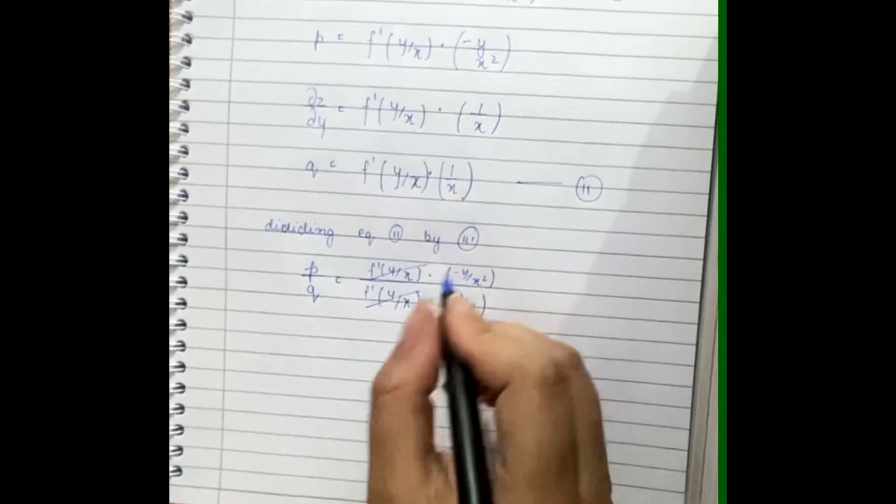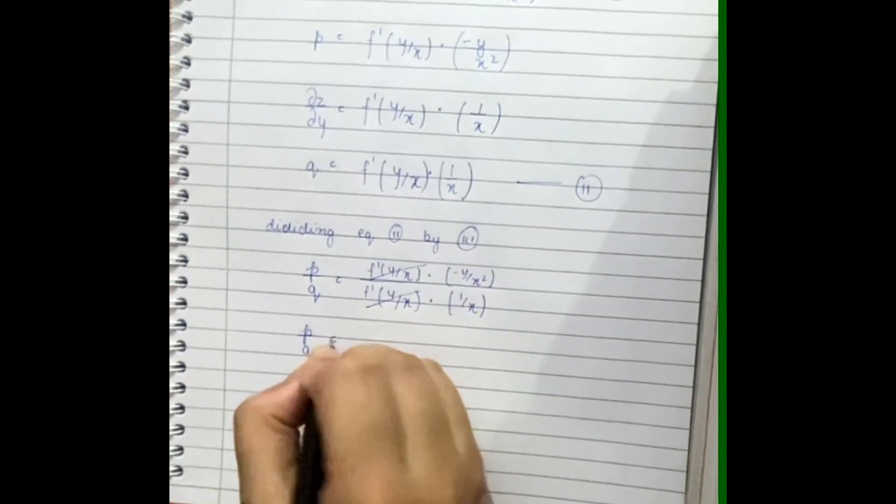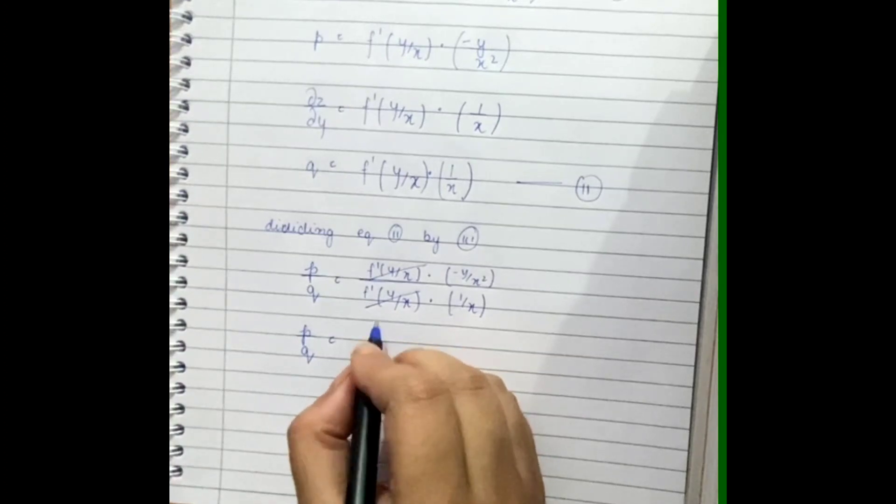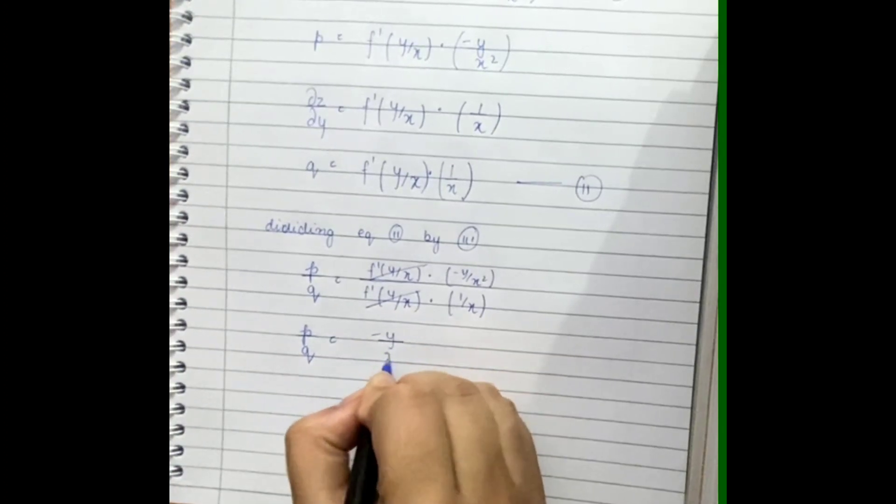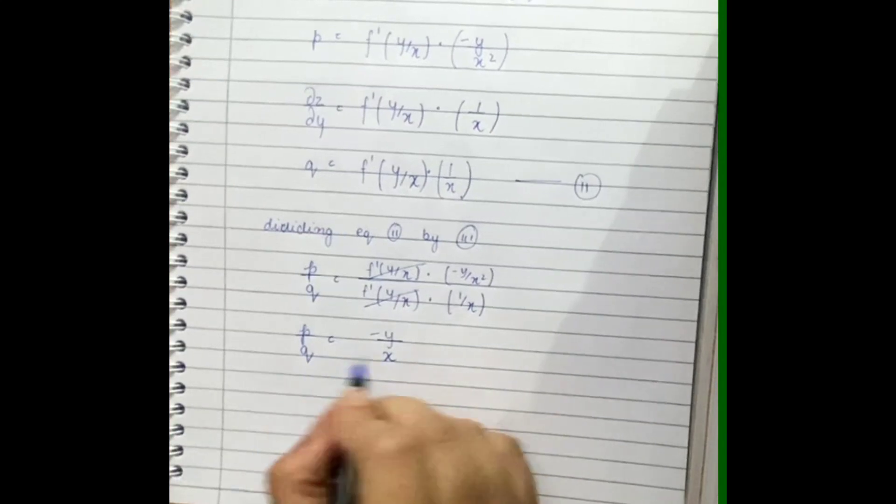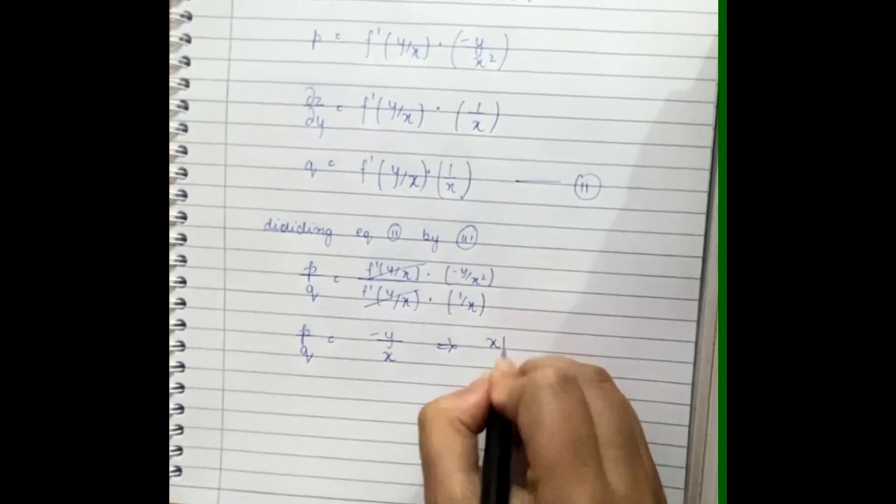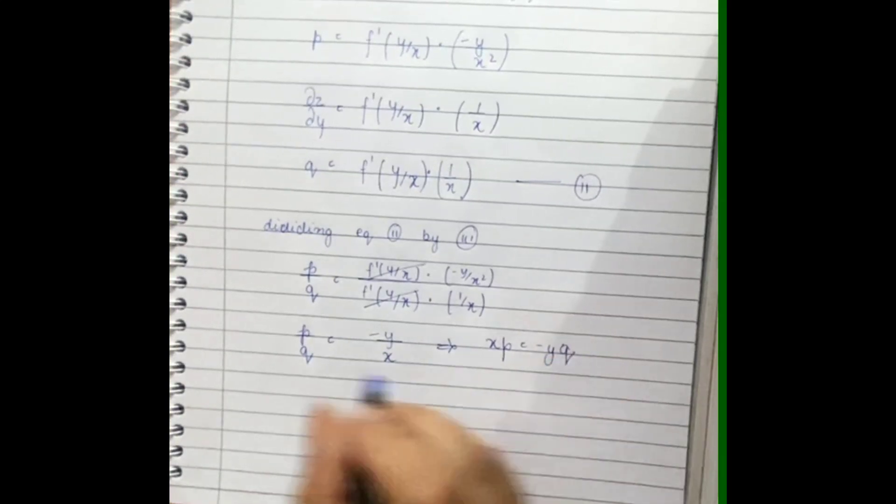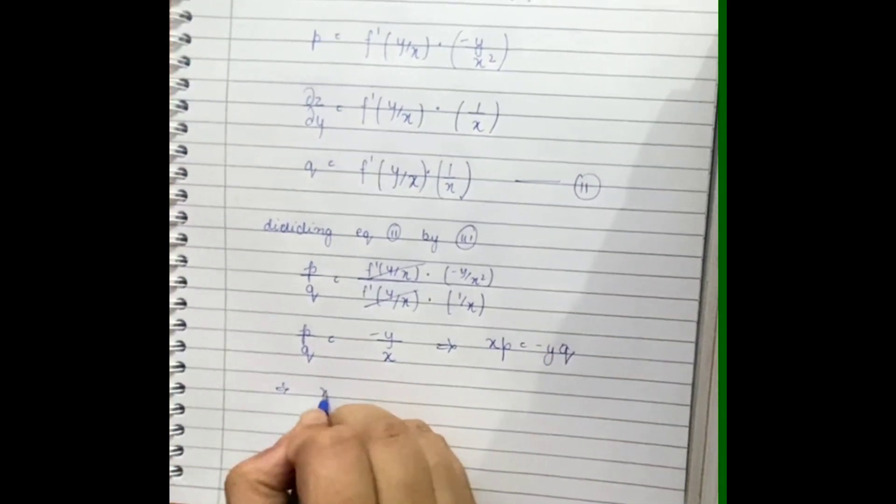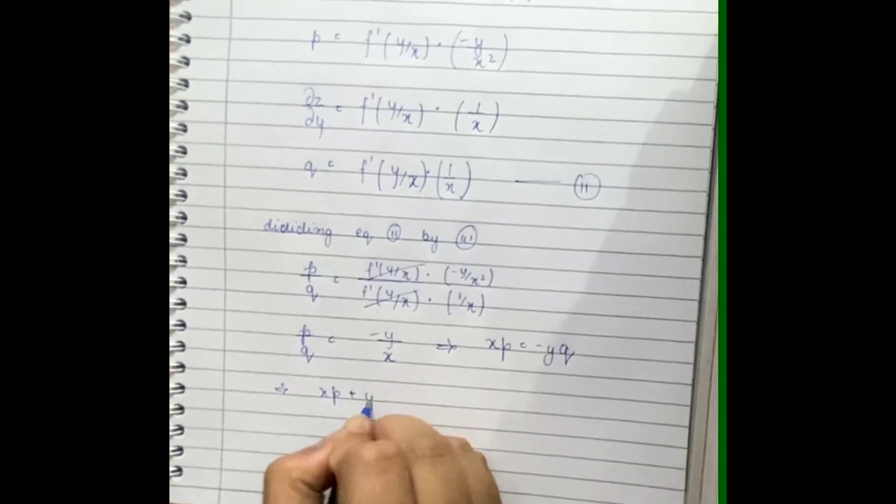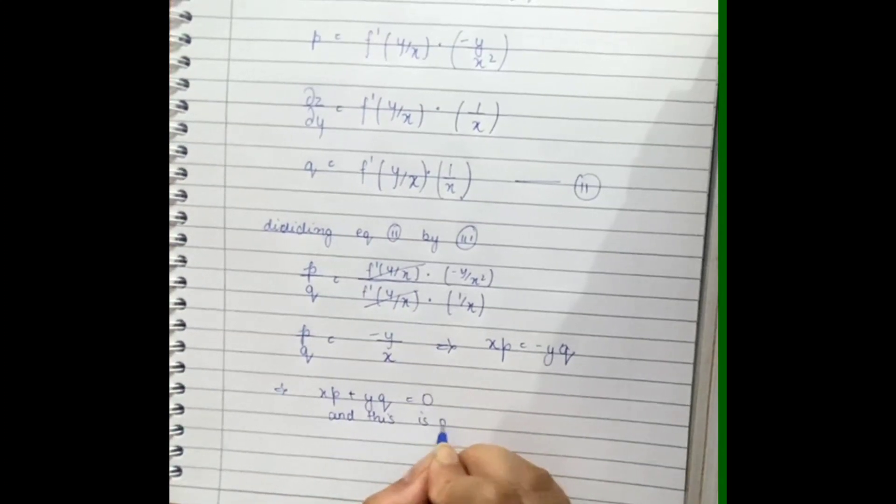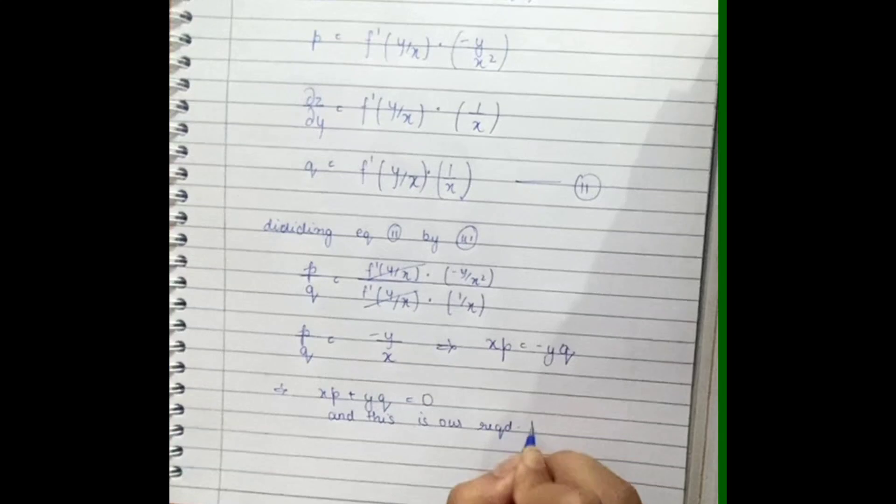This term and this term will get cancelled. We'll get p by q equal to minus y by x. Now on further solving this, we'll get xp equal to minus yq. We can write this as xp plus yq equal to 0, and this is our required PDE. Thanks guys.